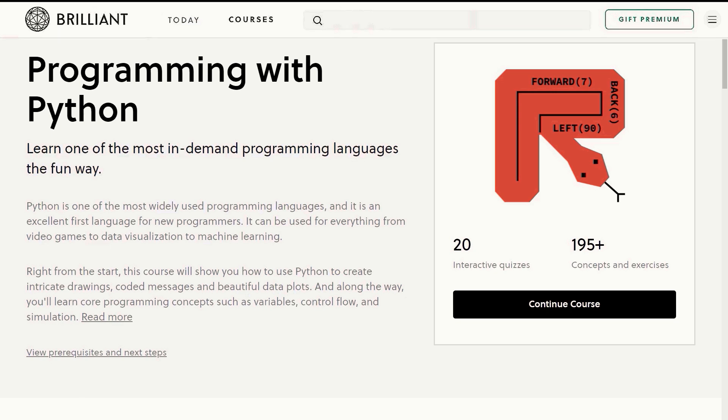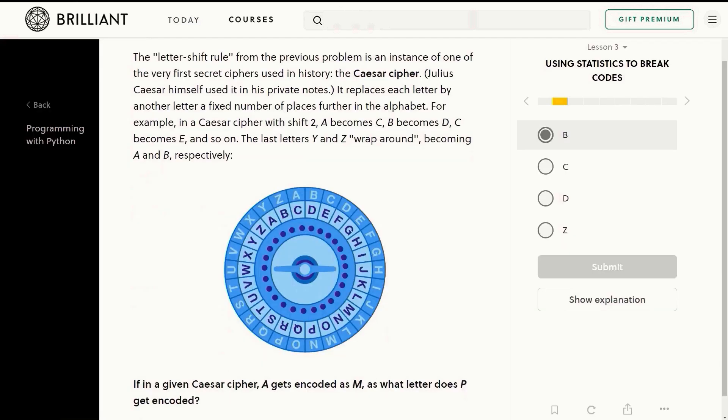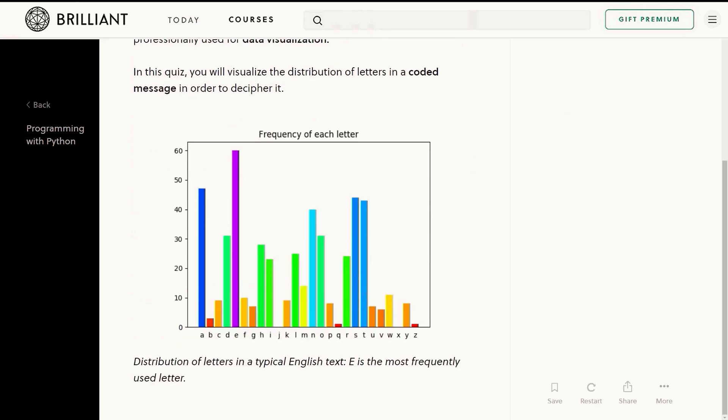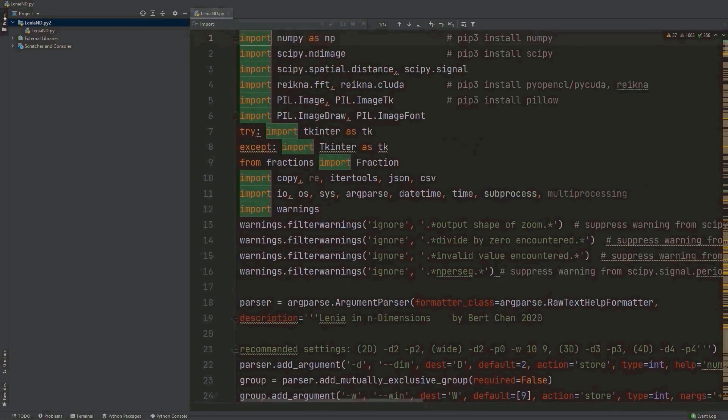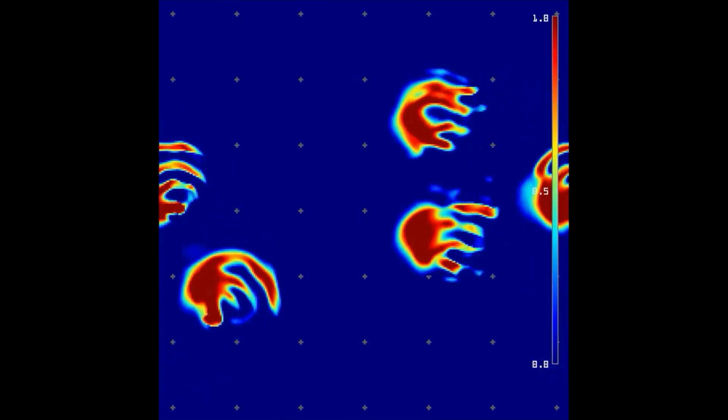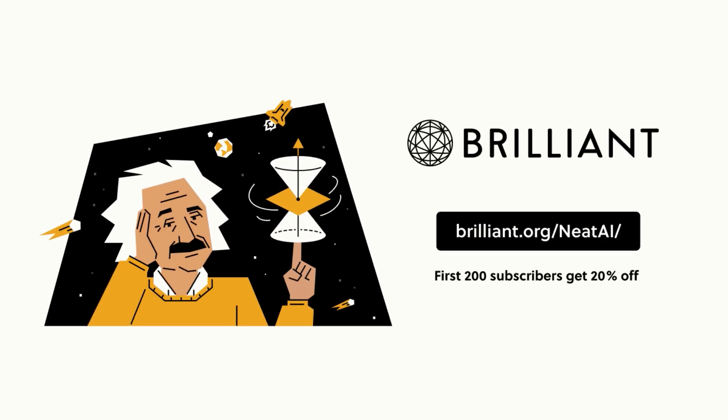Most of my coding these days is done in Python. It's an excellent and very relevant first language for new programmers. The interactive course on Brilliant covers all the basics you'll need to know to get started. Loops, functions, variables and data visualization topics are covered in great detail. Python is the language used to create the wonderful creatures that emerged from the Lenya universe. The first 200 people to use the link in my description will get 20% off their annual membership.